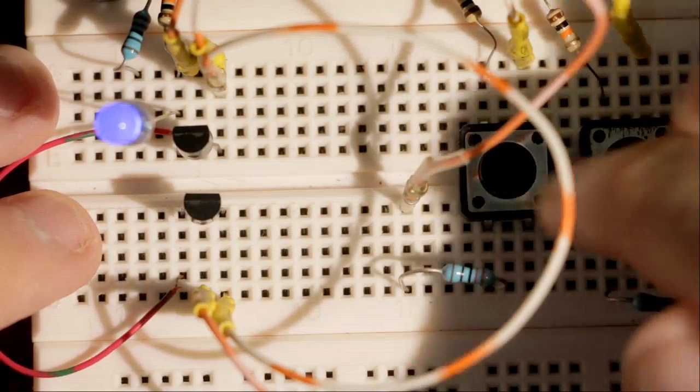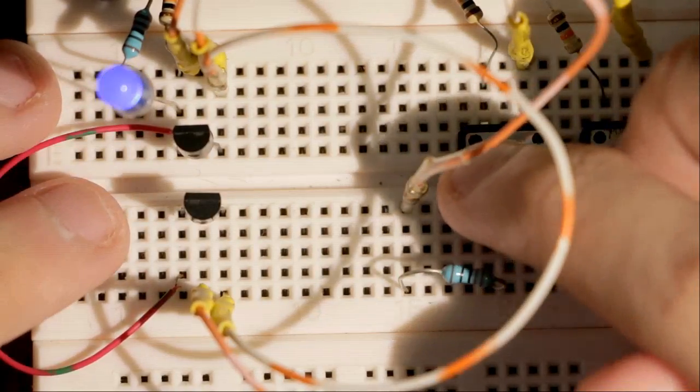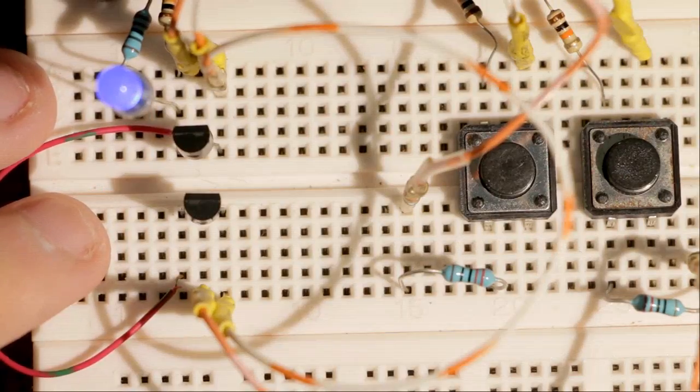As long as any one of them are depressed, the LED goes off. So that is your typical NOR gate behavior.